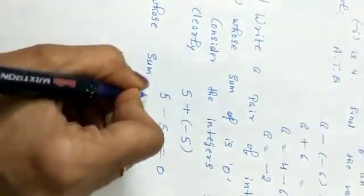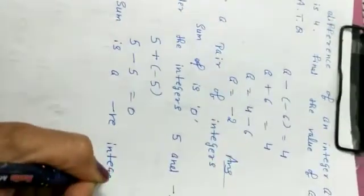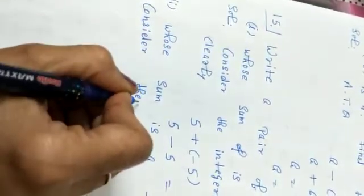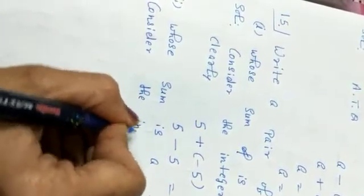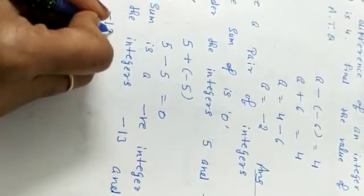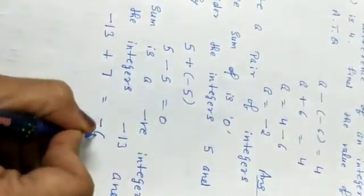Part two: write a pair of integers whose sum is a negative integer. Take the bigger one as negative and the smaller one as positive. Consider -13 and 7. Their sum must be a negative integer, which is the condition for this part.